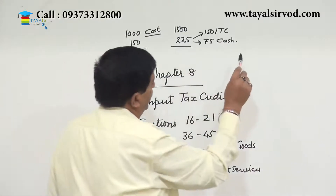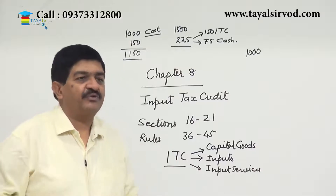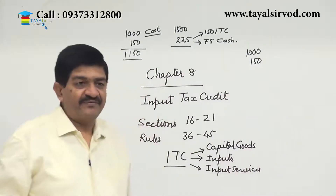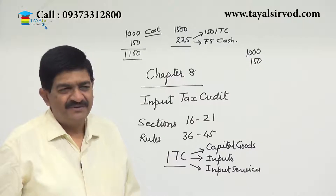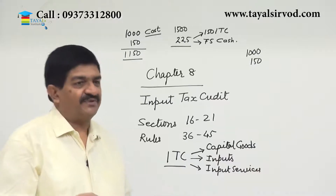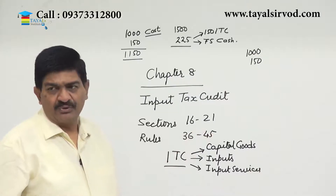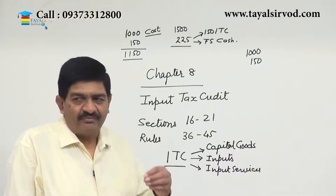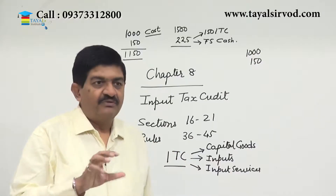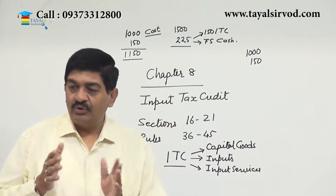So effectively what he has done is paid only for the value addition carried out. Now if we change this figure — instead of 1500, if he supplies the goods again for 1000 rupees — he procured for 1000 and supplied also for 1000. What is the tax liability? 150. And he is already having the credit of 150 — no further liability. So this becomes a value addition tax: if there is value addition, there is additional tax; if there is no value addition, there is no additional tax.